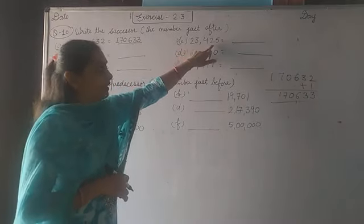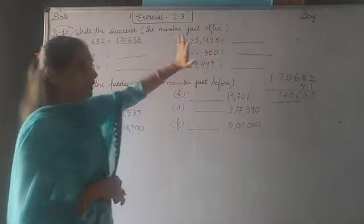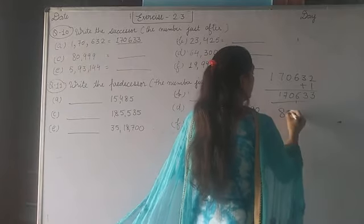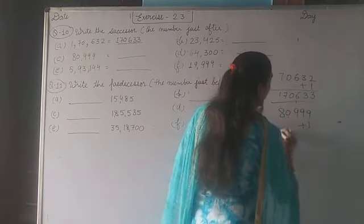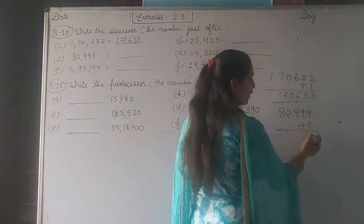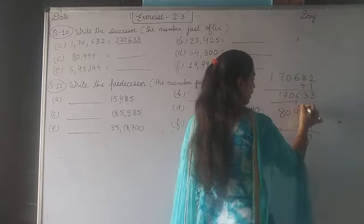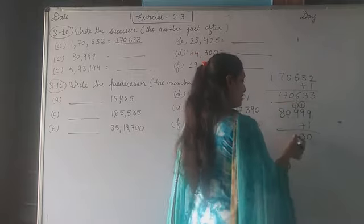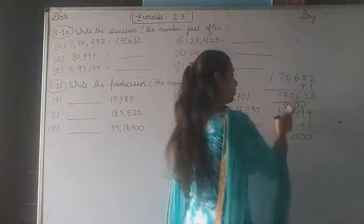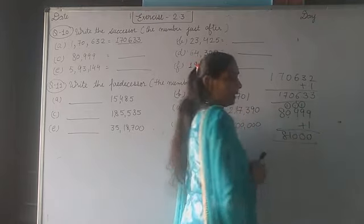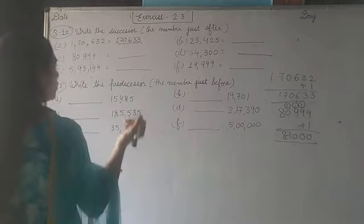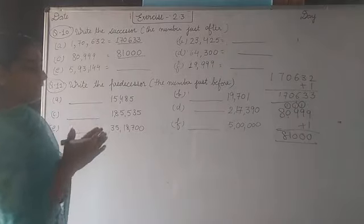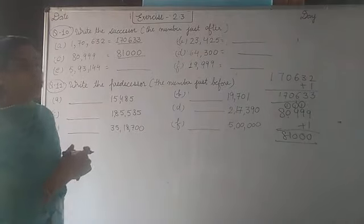Next is also same. Add one here. Then the number becomes 25 to 26. See this question: eighty thousand nine hundred ninety nine. When you add one in the ones place, 9 plus 1 is 10, one carry. Again 9 plus 1 is 10, one carry. Again 9 plus 1 is 10, one carry. Then 0 plus 1 is 1. Here is 8. Then the number becomes eighty one thousand. You have to add completely and see what changes are happening to the other numbers.